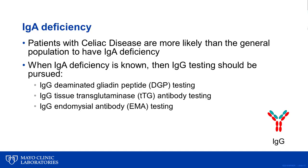Patients with celiac disease are substantially more likely than the general population to have IgA deficiency. When a patient is known to have IgA deficiency, IgG testing should be pursued. This testing approach can be achieved with the IgG deaminated gliadin peptide (DGP) test, the IgG tissue transglutaminase (TTG) antibody test, or the IgG anti-endomysial antibody (EMA) test.